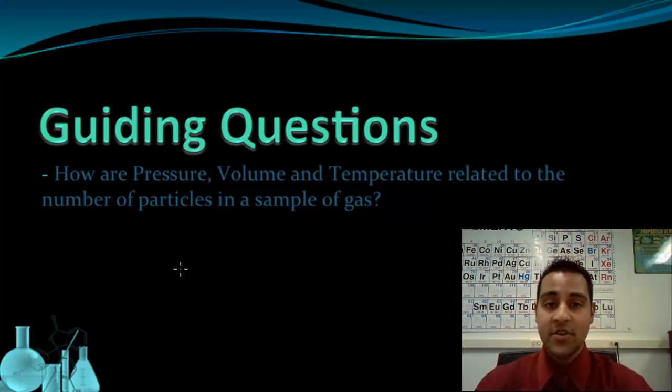In the last video, we looked at the combined gas law, P1V1 over T1 equals P2V2 over T2. The combined gas law related pressure, volume, and temperature to each other, but it only works for a fixed amount of gas, so n, the moles of the gas, was held constant.